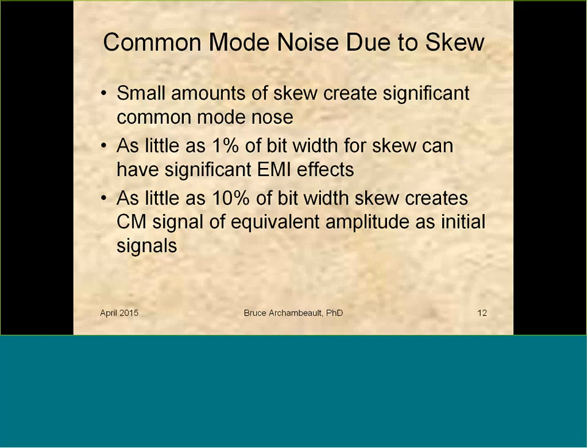Differential signals are often about one volt peak to peak. We know that above a gigahertz, if you have one millivolt of noise on an unshielded cable outside your enclosure, that can cause you to fail the EMC radiated limits. If I get one volt of common mode noise because I had 10% of bit width, that's obviously way too much — three orders of magnitude more than one millivolt — which means I have to do filtering and shielding to add up to 60 dB.